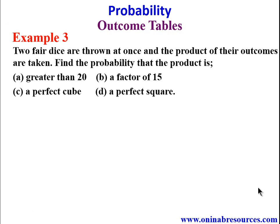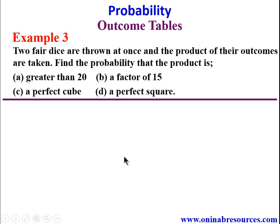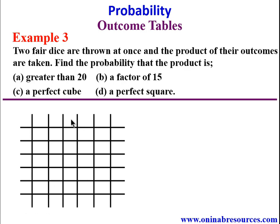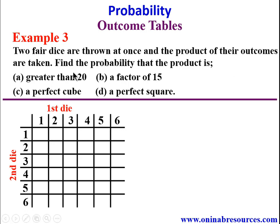Example 3: two fair dice are thrown at once and the product of their outcomes is taken. Find the probability that the product is A) greater than 20, B) a factor of 15, C) a perfect cube, and D) a perfect square. Without an outcome table, the solution cannot be reached. The first die is 1 to 6 and the second die is also 1 to 6, and we are looking for the product.